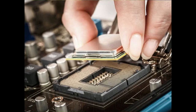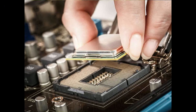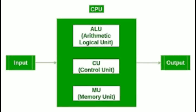While the central processing unit can be observed from the outside, it is positioned on the motherboard inside the system unit. The central processing unit consists of three main components: ALU or the Arithmetic and Logical Unit, CU, and Memory Registers.